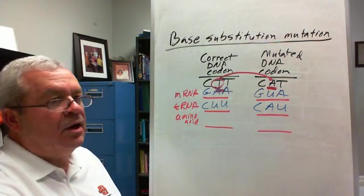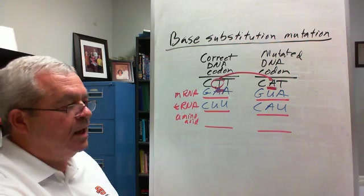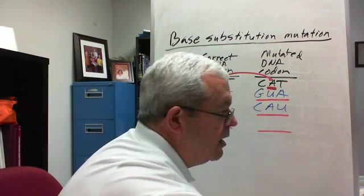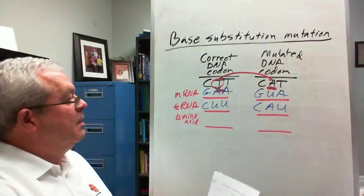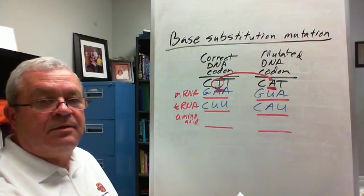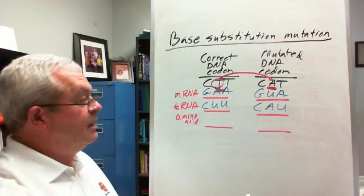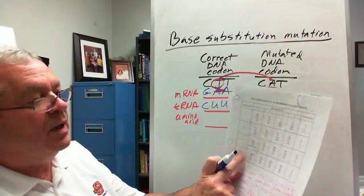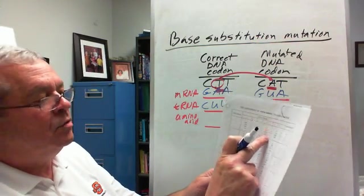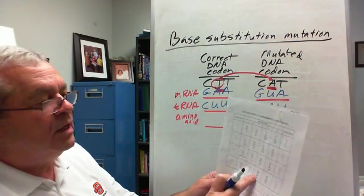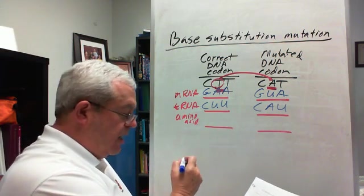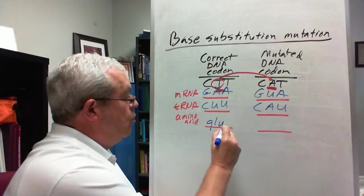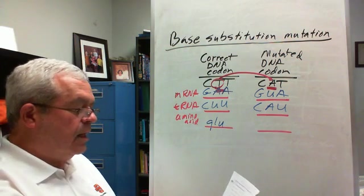And then we need our genetic code chart to finish this up. Do I have mine handy? I sure hope so. Sure I do. And so what amino acid results in each of these cases? Well, C, U, U. Well, here we got first base C, second base U, and third base U. I see a G, L, U. A G, L, U.